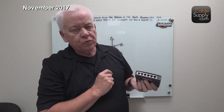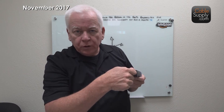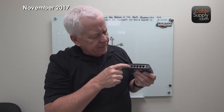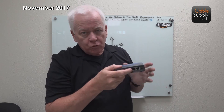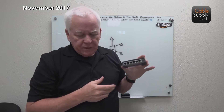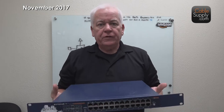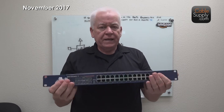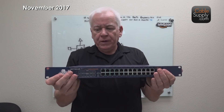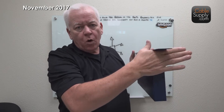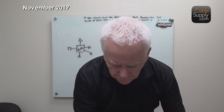They all have these RJ45 ports in the back, and they plug in the same. You'd want to plug your patch cords in here. And of course, this would be back in your data room. They come in all different sizes. Here's a bigger one that fits on a rack — rack mountable. You can rotate these and put them up against the wall and bolt them to the wall.